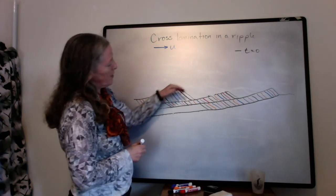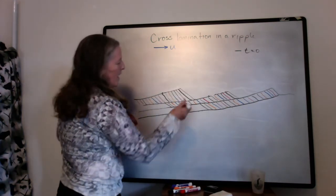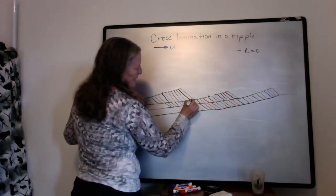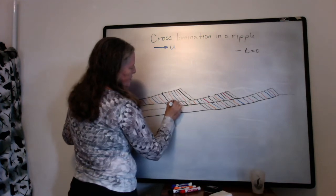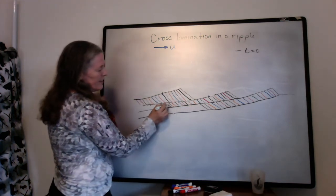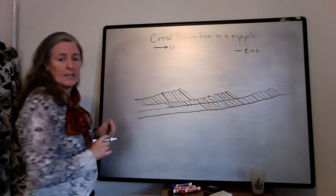So through time it gets buried with successive layers. And that erosion surface is what makes these surfaces underneath get buried, that separate out layers of cross lamina.